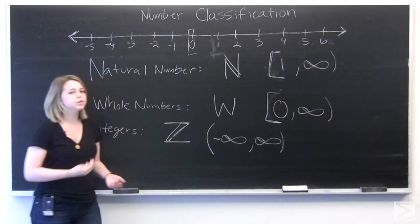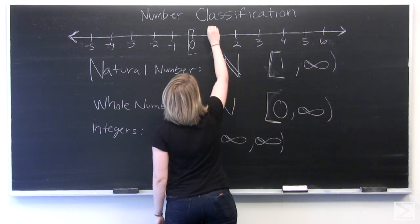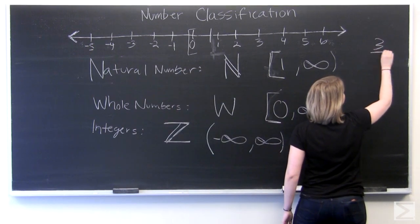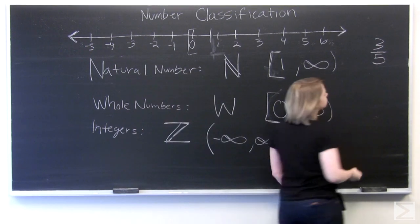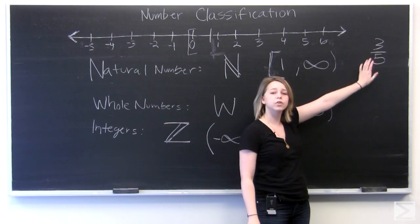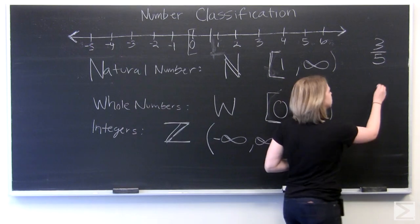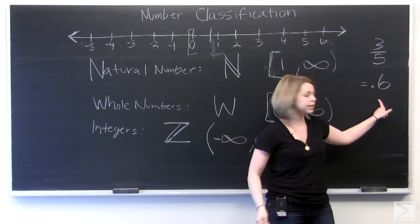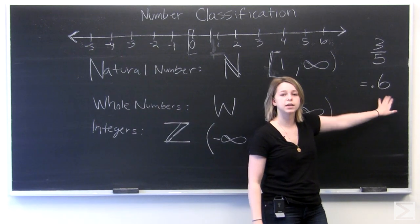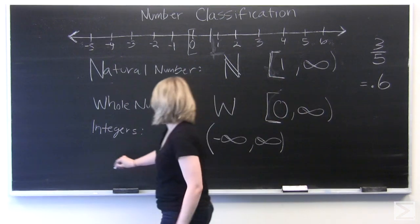Now what if we do use a fraction to express our number? For example, let's look at the number three-fifths. We'll put it right there. So this number, it's represented with an integer over an integer. And it can also be expressed as a decimal, in this case 0.6, which doesn't repeat. It terminates right after the six. So numbers such as these are referred to as rational numbers.